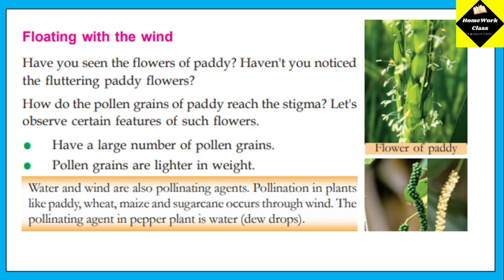How do the pollen grains reach the stigma? Let us observe certain features of such flowers. They have a large number of pollen grains. Pollen grains are lighter in weight. In wind pollination, the pollen grains are lighter in weight.